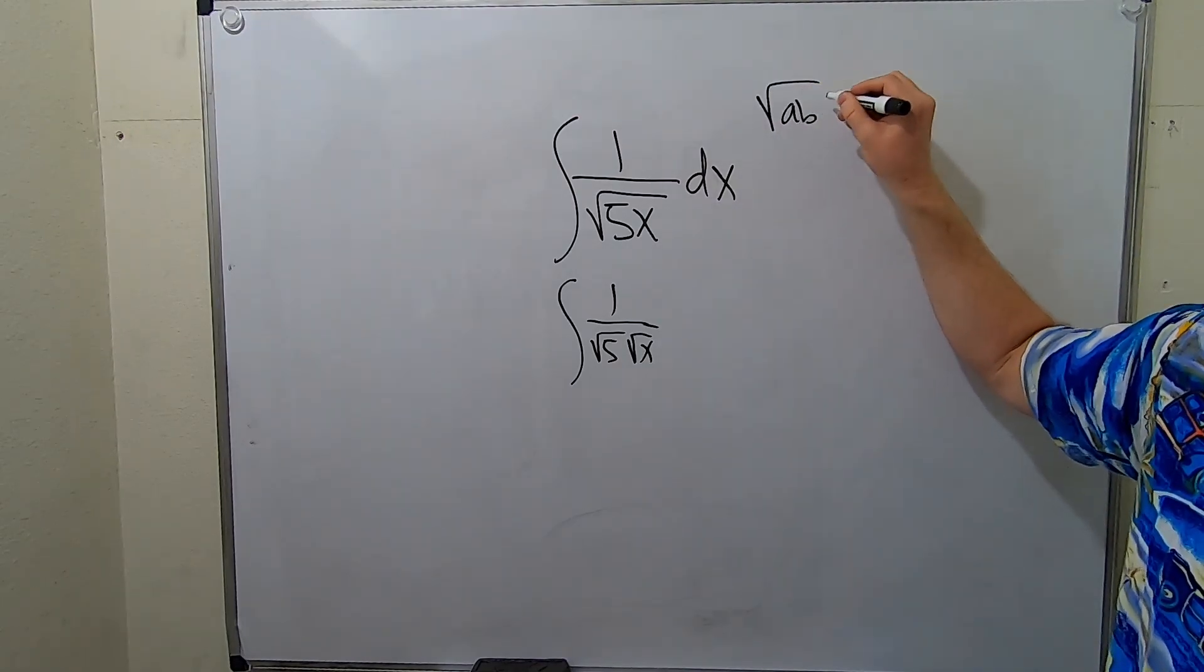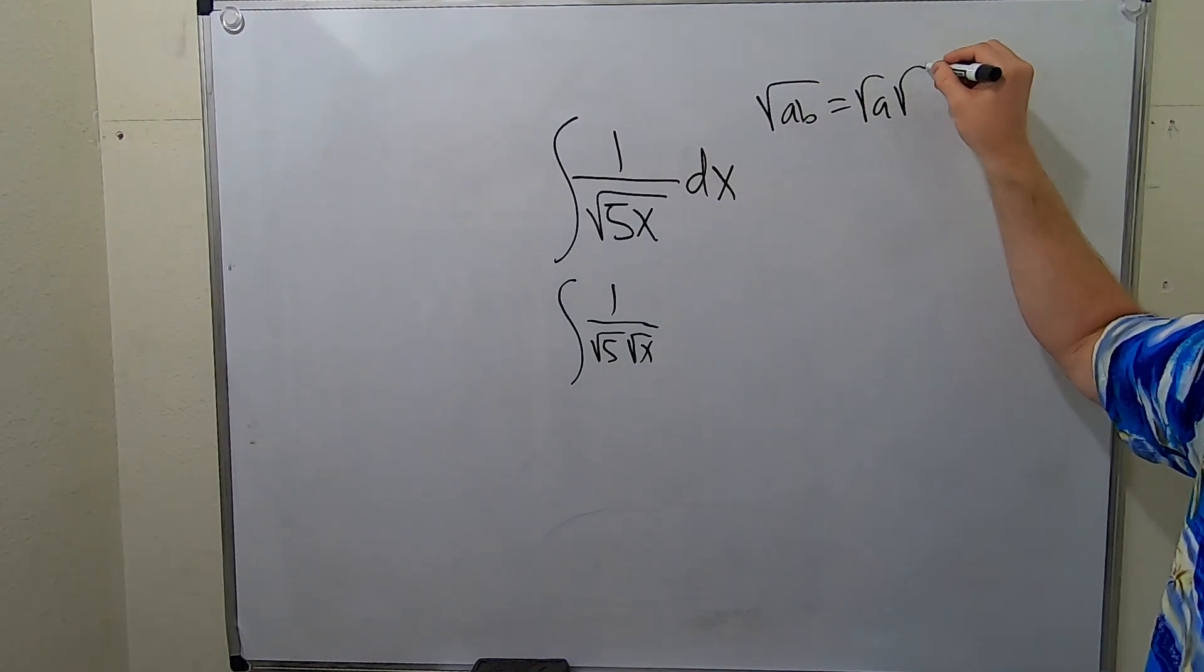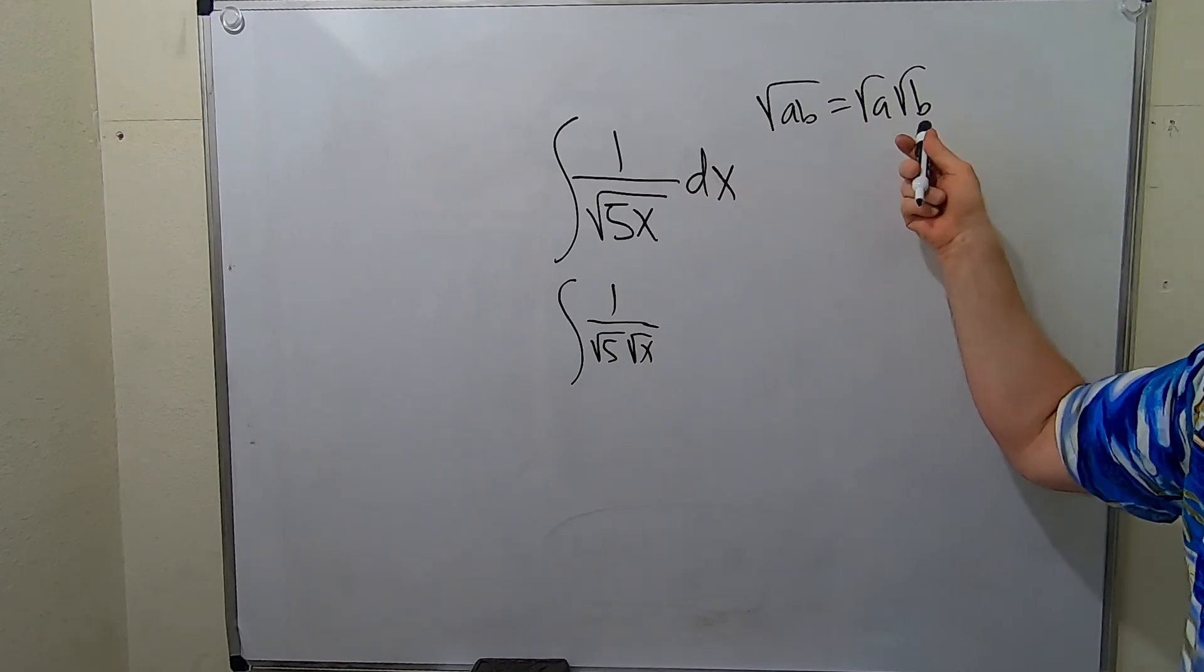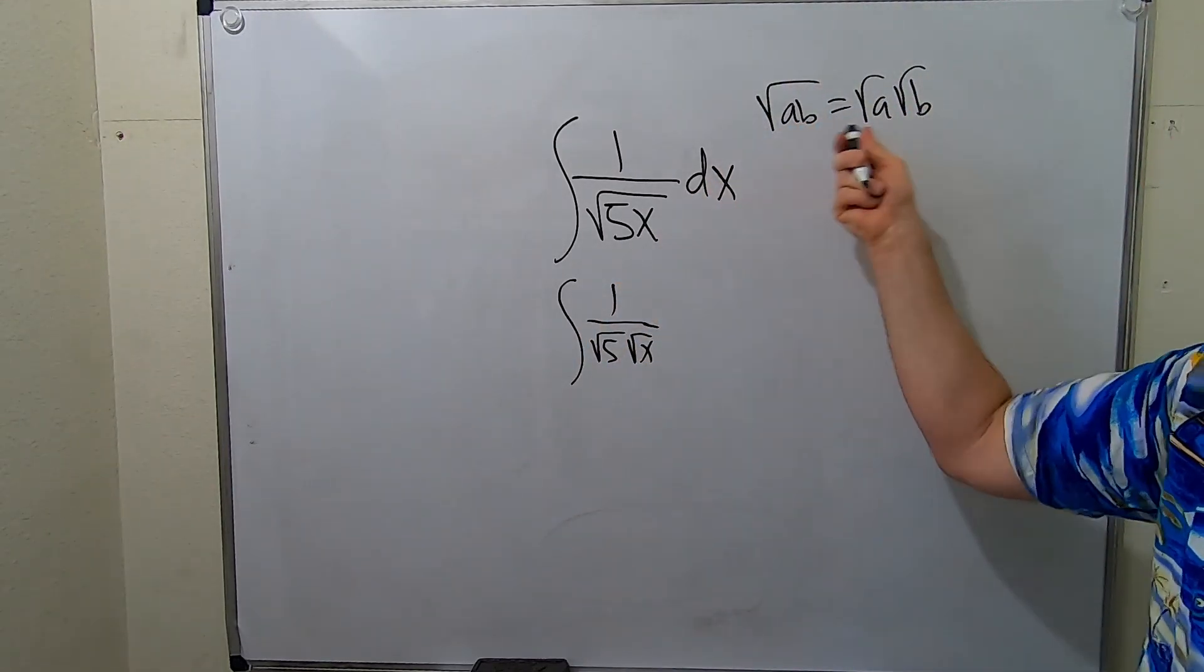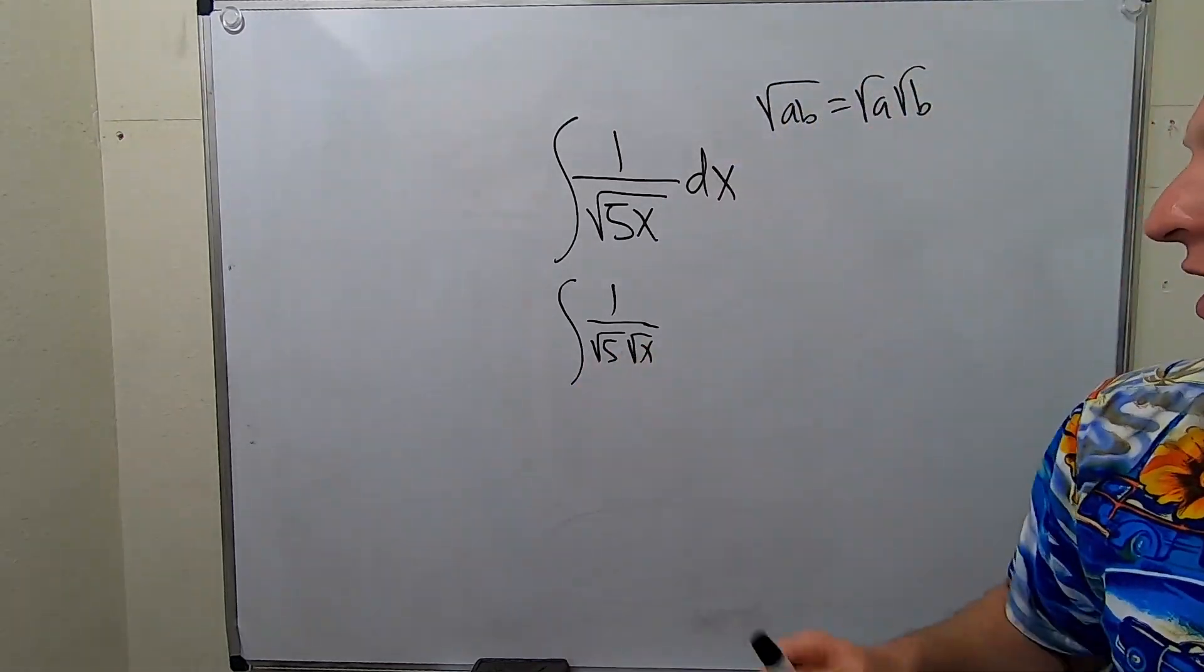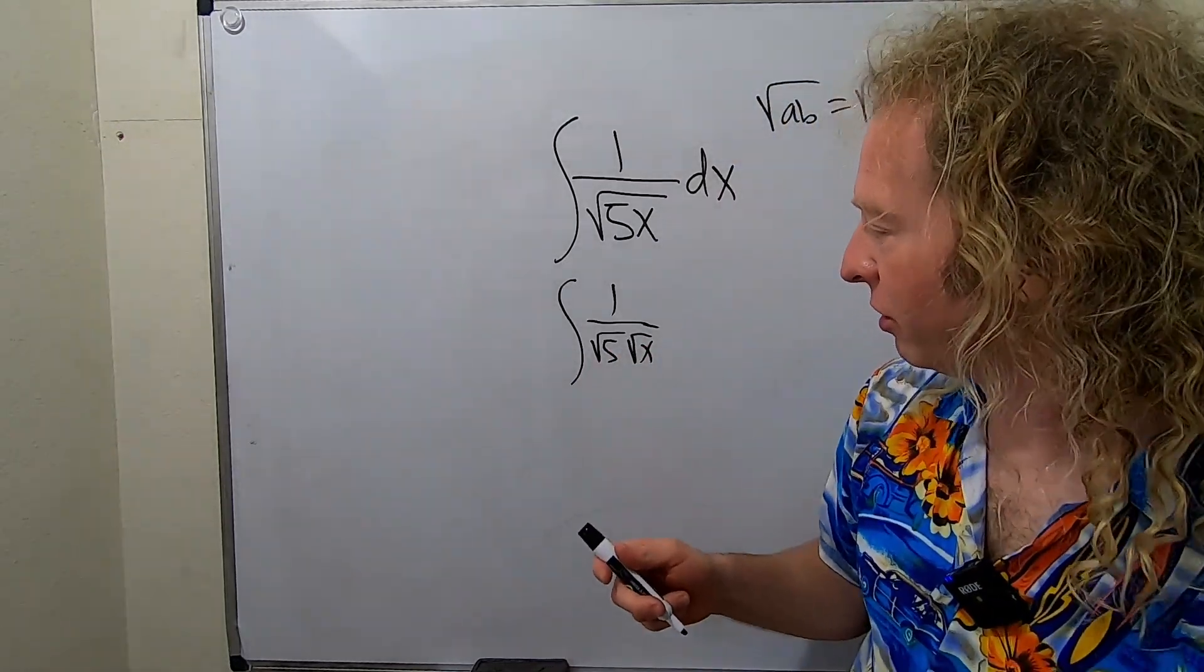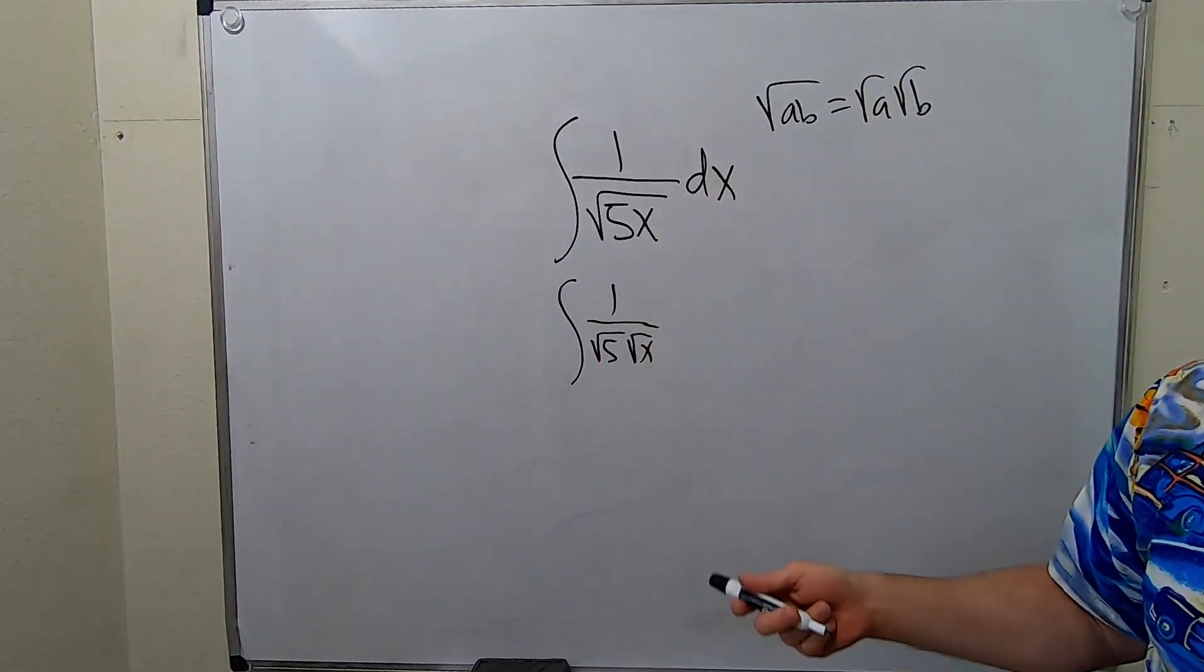If you have the square root of ab, that's equal to the square root of a times the square root of b. And you can do this always as long as they're both not negative. If they're both negative numbers like a and b, it's not allowed. So here 5 is not a negative number so we can do that. So we're allowed to do that with the square roots.